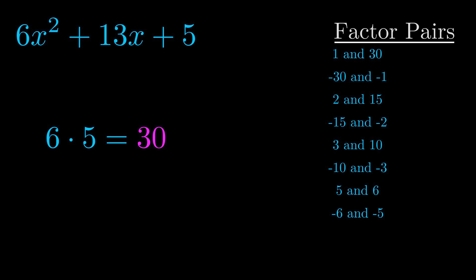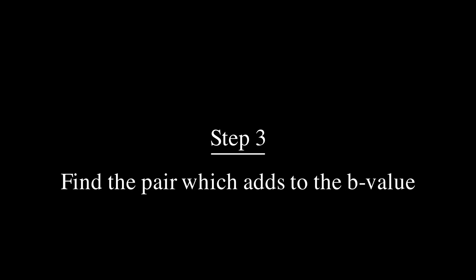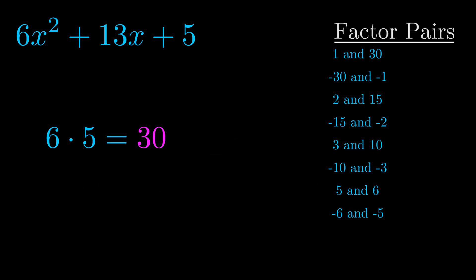Now once you have these factor pairs, the goal is to find which of these pairs adds to the b value. The b value is the coefficient on the x term. That's the middle term, the one that we haven't done anything with yet. And really this is the only factor pair that we need.